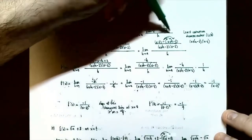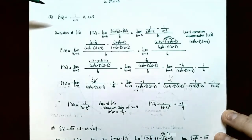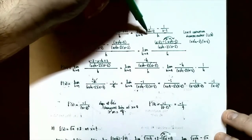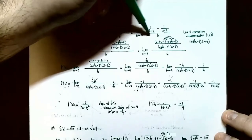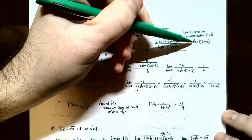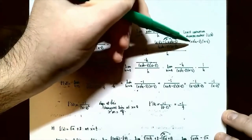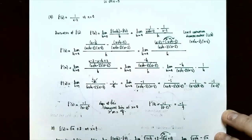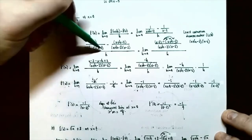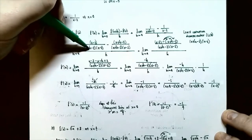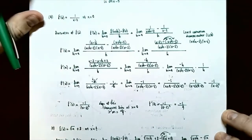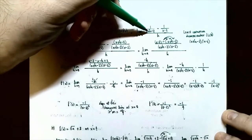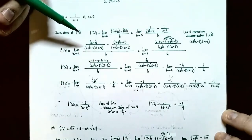To subtract the two fractions in the numerator, we need a least common denominator. The two denominators are x plus h minus 2, and x minus 2, so the LCD is x plus h minus 2 times x minus 2. Rewrite both fractions with that LCD. The first fraction's numerator becomes 1 times x minus 2, which is x minus 2. The second fraction's numerator becomes 1 times x plus h minus 2, giving x plus h minus 2. All of this is still divided by h.